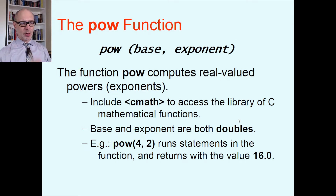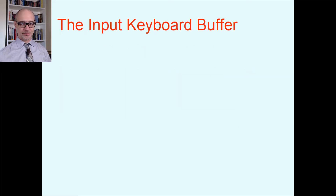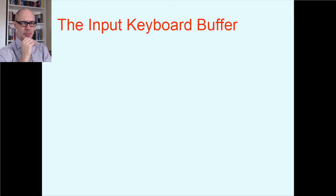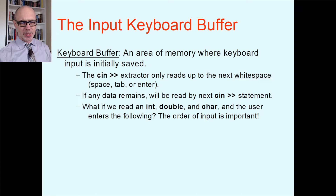Now that you know about function calls, the point of this video is to talk about input formatting and output formatting. First, to really understand input formatting, you have to understand what's called the input keyboard buffer — the place in memory where keypresses on the keyboard initially go. The keyboard buffer is an area of memory where keyboard input is initially saved. Generally speaking, the word 'buffer' means a place where something is being temporarily stored.